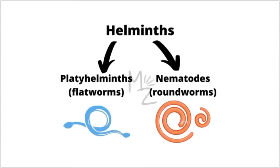Helminths are further classified as platyhelminths, the flatworms, for example, Taenia saginata, and nematodes, roundworms, for example, Enterobius vermicularis.